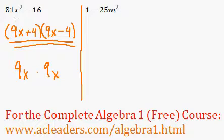The fully factored form of 81x squared minus 16 is 9x plus 4 times 9x minus 4. That's it.